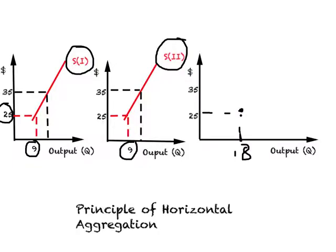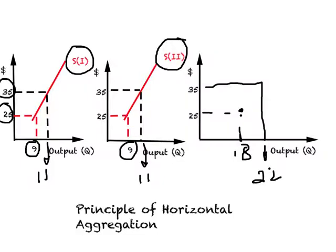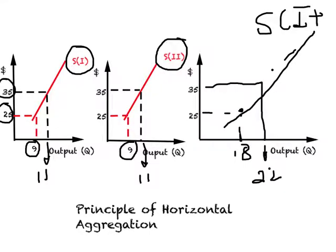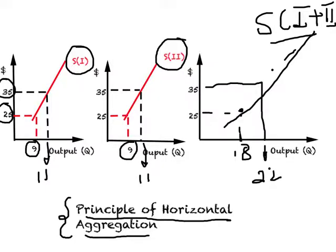When the price is $35, another point on the supply curve: the first firm is willing to supply 11 units of output, and so is the second firm, so both together are willing to supply 22 units. In this way you can plot other points, and when you join them you get a combined supply curve. We can do this for millions of firms to get a market supply curve using the principle of horizontal aggregation.